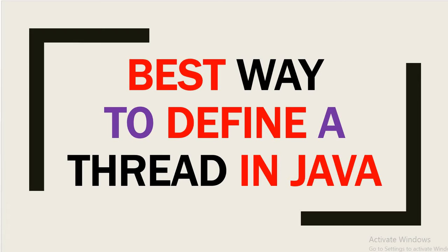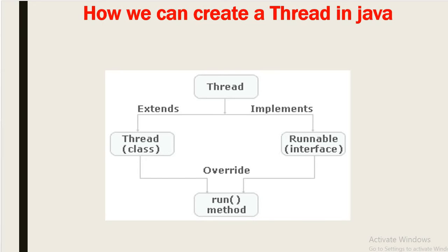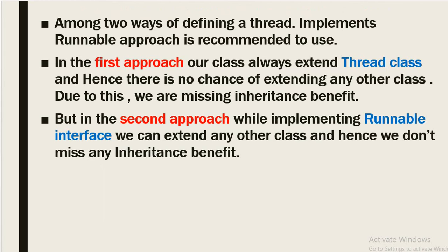Welcome back. Today we will discuss which is the best way to define a thread in Java. We can create a thread in Java by two ways: one is by extending the Thread class, and another way is by implementing the Runnable interface. In both cases we have to override the run method, because when the thread starts, the run method will execute automatically.